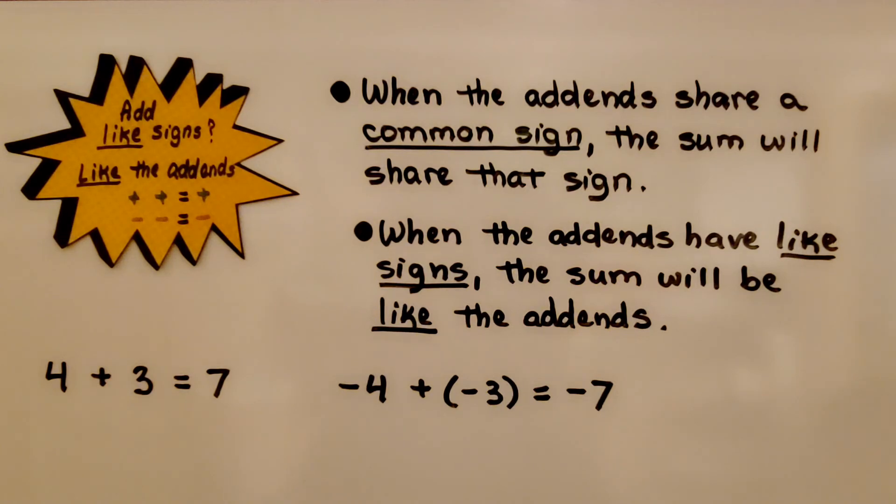When the addends share a common sign, the sum will share that sign. So when the addends have like signs, they're alike, the sum will be like the addends.